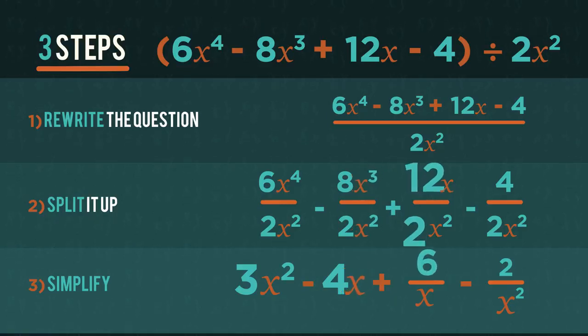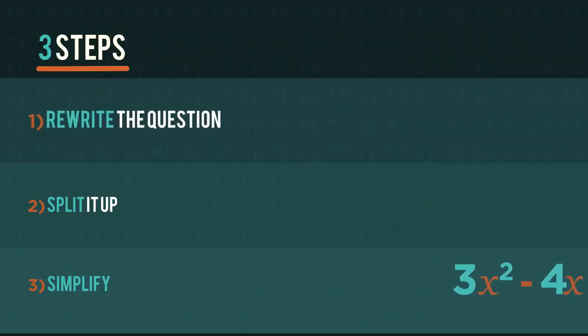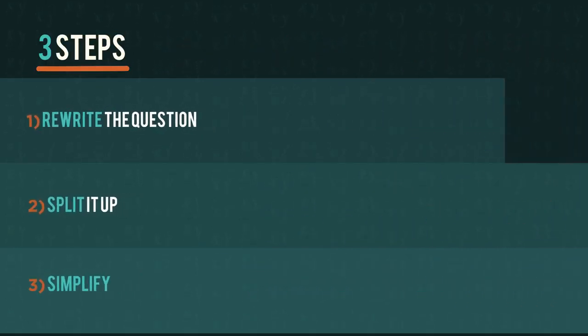12 divided by 2 to get 6 and x on top divided by x squared leaves an x on the bottom, and 4 divides by 2 to get 2 on top and the x squared stays on the bottom. So just take it step by step and you'll have no problems.